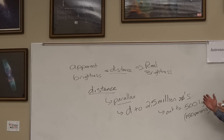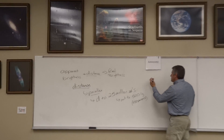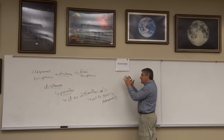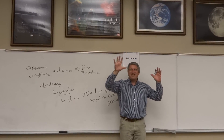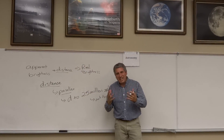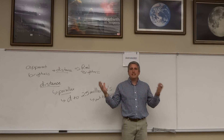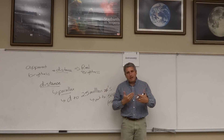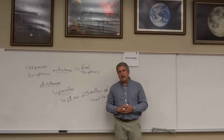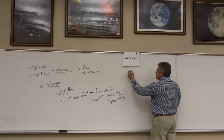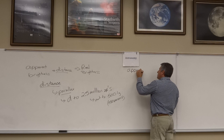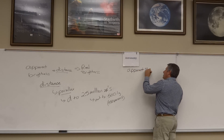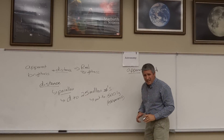We set up a scale. You can't just go out in the sky and say that star is bright, and that star is dim, and that star is sort of bright — we need a scale. Just like when someone asks you what the temperature is and you use Fahrenheit or Celsius to describe that, the scale we will use is called apparent magnitude. The apparent magnitude scale allows us to quantify how bright a star appears in the sky.